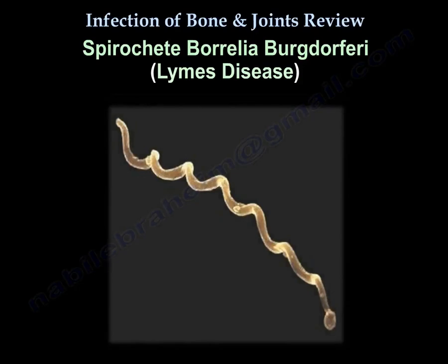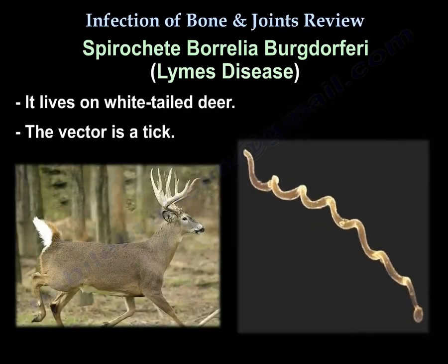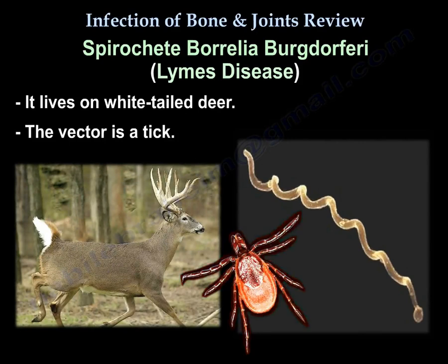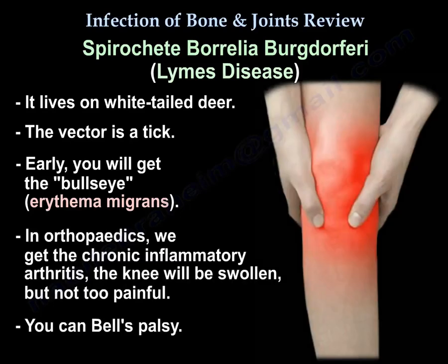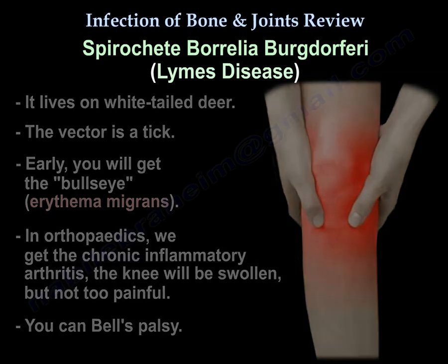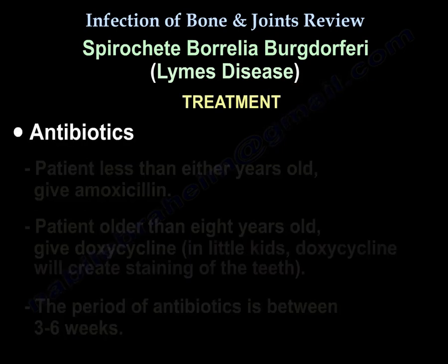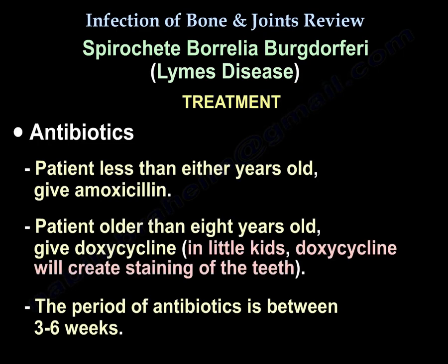Lyme disease is caused by the spirochete Borrelia burgdorferi, which lives on white-tailed deer, with a tick as the vector. Early disease presents with the bull's-eye rash, erythema migrans. In orthopedics, we see chronic inflammatory arthritis with a swollen but not too painful knee, and Bell's palsy can occur. Treatment is antibiotics: amoxicillin for those under age 8, and doxycycline for those over 8, because doxycycline causes tooth staining in young children. The course is 3 to 6 weeks.